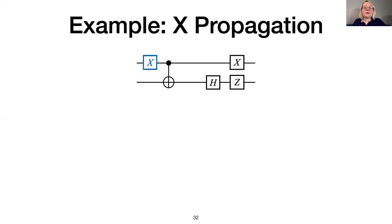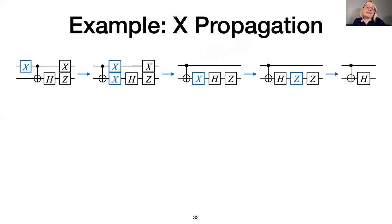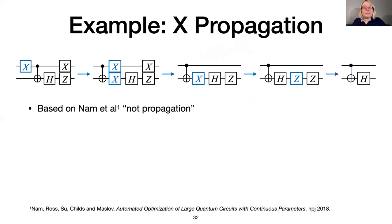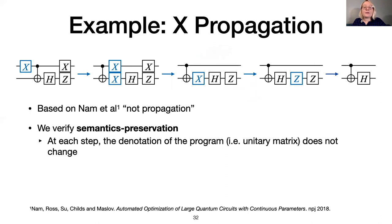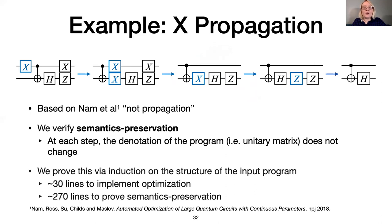Here's an example of an optimization that uses our library functions for propagating a gate with cancellation and commutation rules. In this optimization, called X-propagation, the goal is to move all X-gates to the end of the circuit, cancelling them when possible. We first apply a commutation rule that says that an X-gate can commute through a two-qubit gate. We then apply a cancellation rule that says that adjacent X-gates can be deleted. And so on. This optimization is used as a preprocessing step by Nam et al. It preserves semantics because each application of a circuit equivalence leaves the overall matrix denotation unchanged. We can prove this property by induction on the structure of the input program. Using our VOQC library functions, this optimization is implemented in about 30 lines.